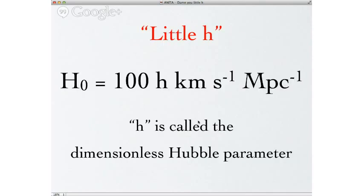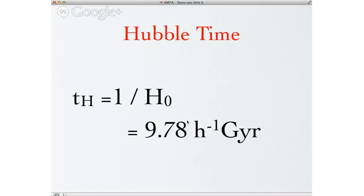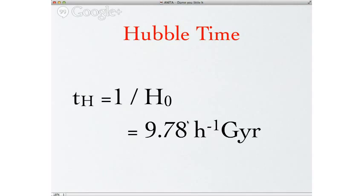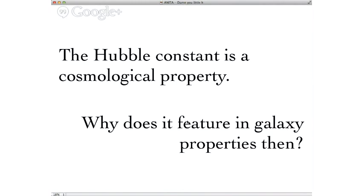The units of Hubble's law are kilometers per second per megaparsec — two distances that cancel — so the units are actually inverse time. Astronomers simplify this to the Hubble time, which is just one over the Hubble constant; as the Hubble constant changes, the Hubble time changes, and it's a rough approximation of the age of the universe. Similarly, multiplying Hubble time by the speed of light gives the Hubble distance, which defines the Hubble sphere — about 3 gigaparsecs with an inverse h in there.